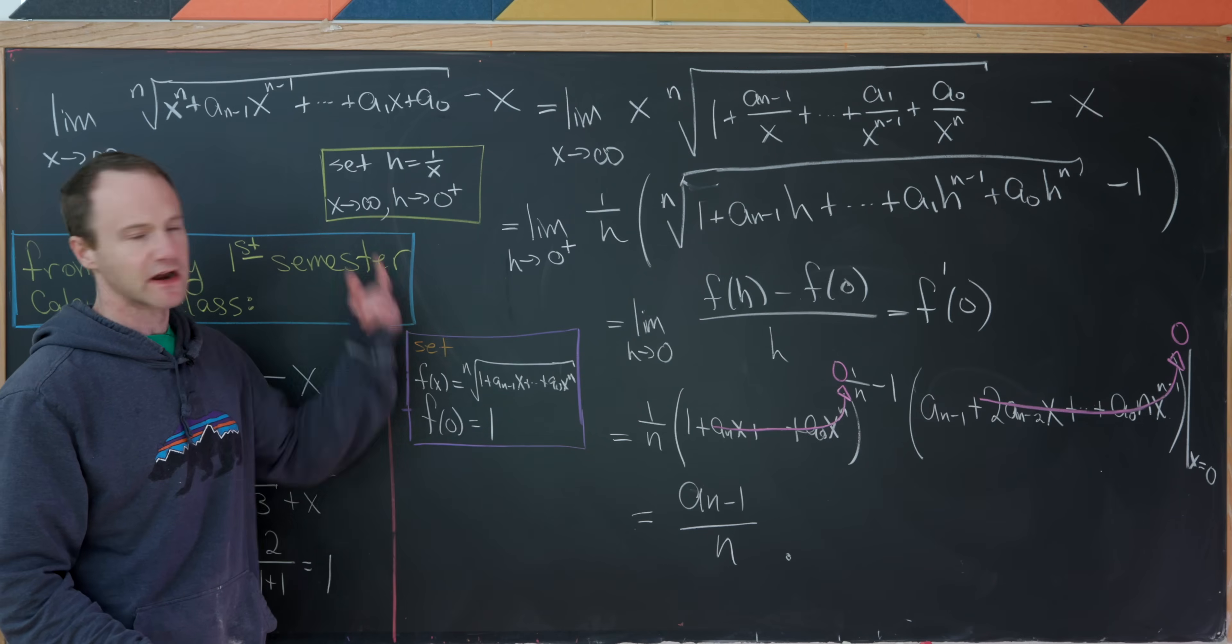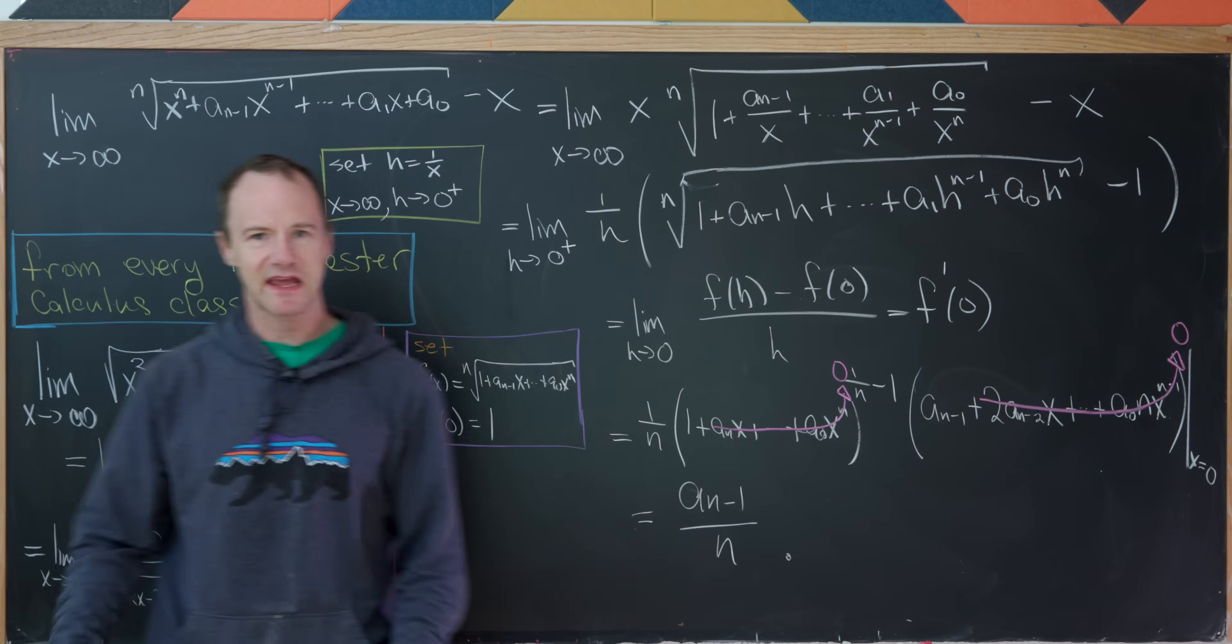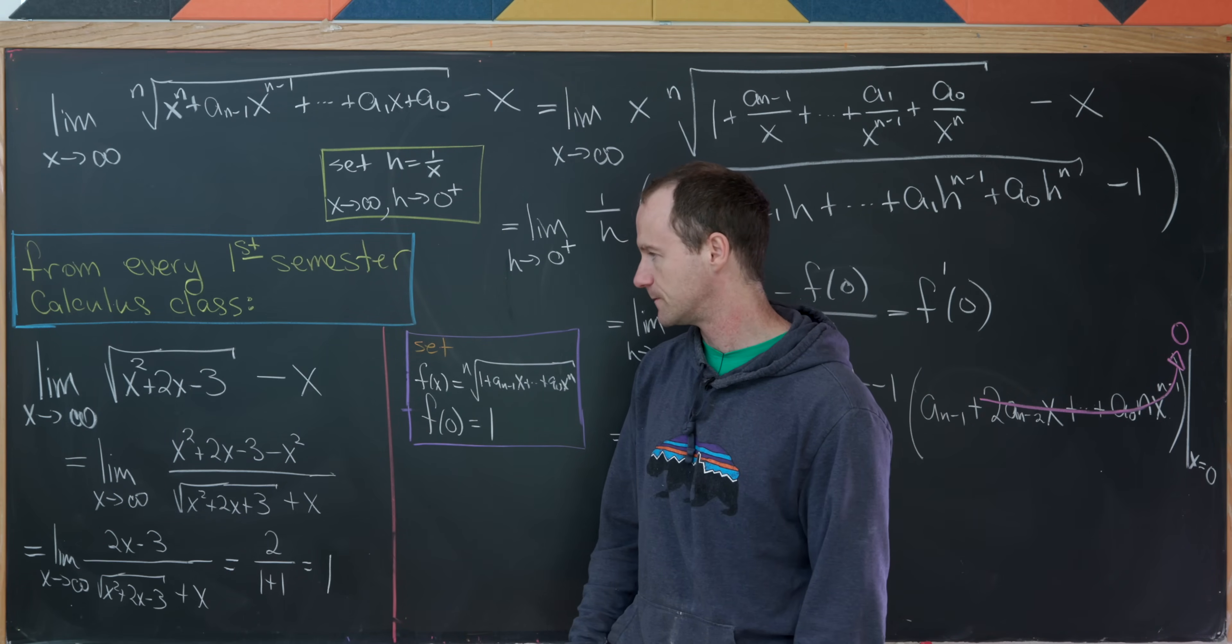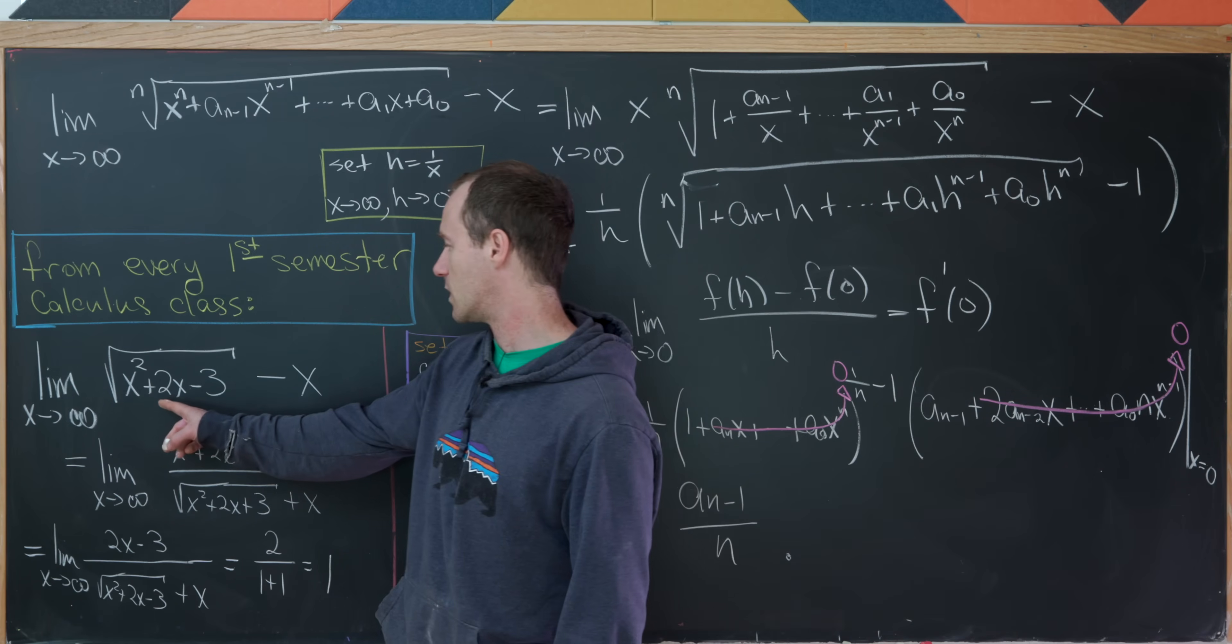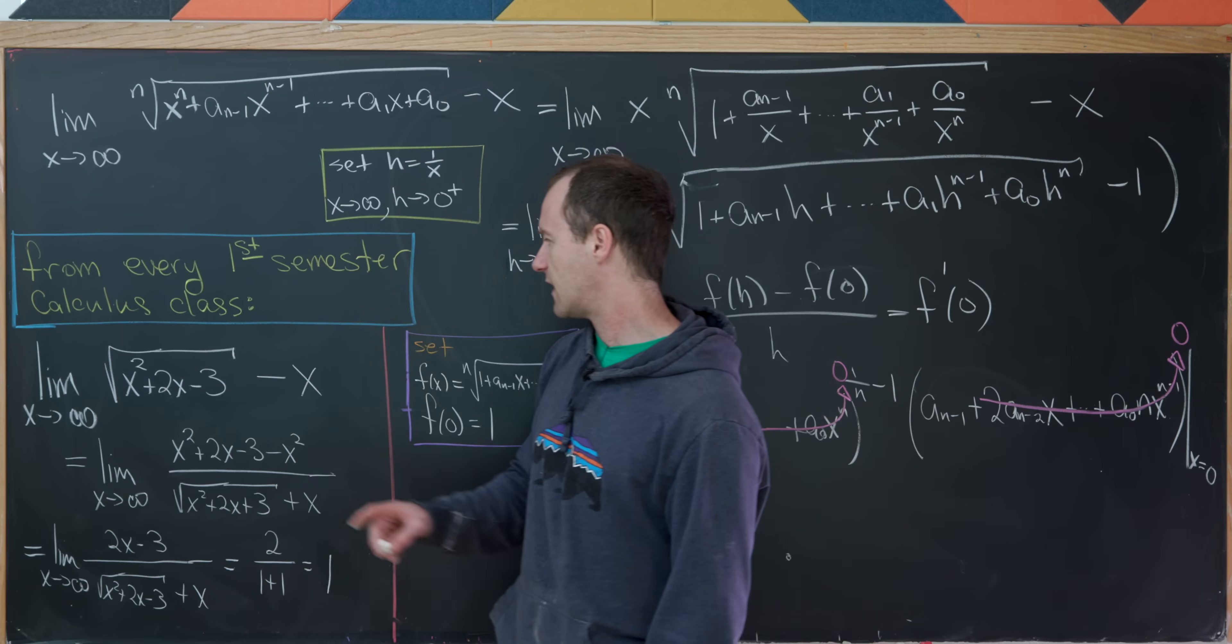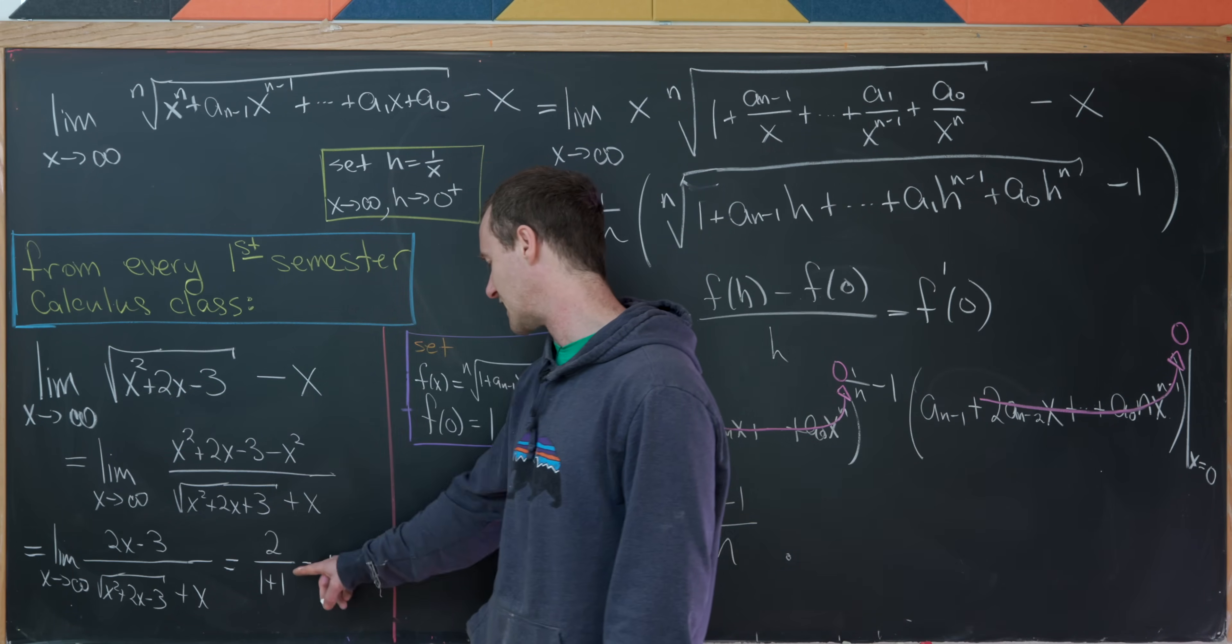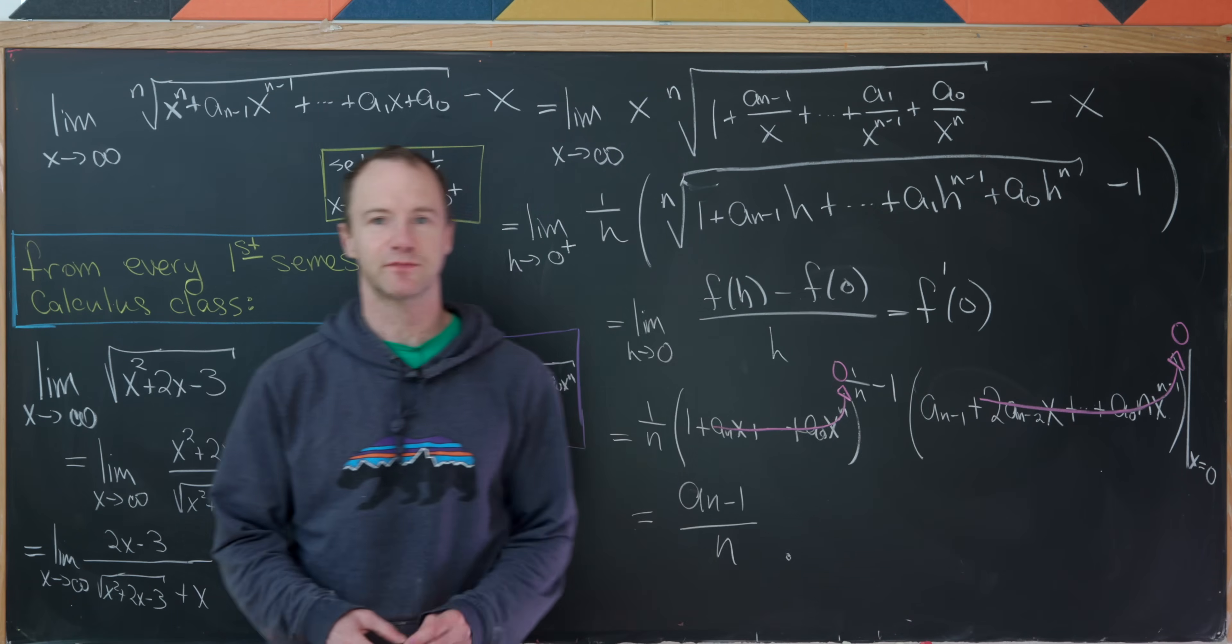Okay, that's cool. We've done it. We found this general limit. And now let's go back here and check to make sure that it works for this example. So if we look here, a sub n minus 1, the role of that is being played by 2. And then n is being played by 2 as well because we've got a square root. And the answer should be a sub n minus 1 over n. In other words, 2 over 2. But that's exactly what we have. 2 over 2, which is 1. And that's a good place to stop.